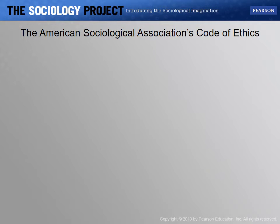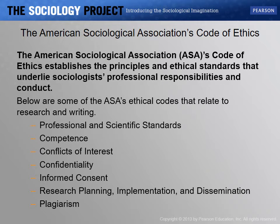Research must also follow the ASA's Code of Ethics. I'll put the American Sociological Association Code of Ethics up on the Blackboard page. It essentially establishes the principles and ethical standards that underlie a sociologist's professional responsibility and conduct, including being competent, maintaining professional and scientific standards, avoiding conflicts of interest — that is, putting your needs ahead of the subject's needs — confidentiality, which is a really big one, and informed consent, which means telling subjects the risks involved.